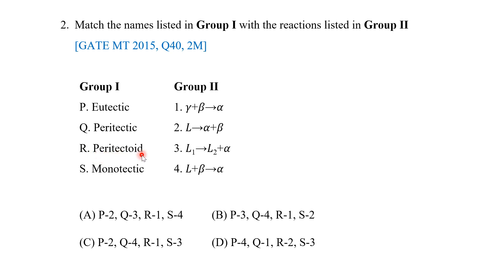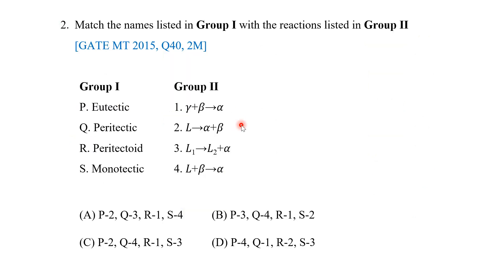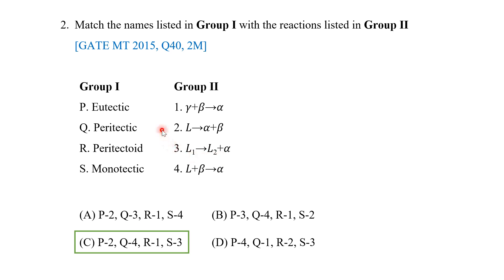Peritectic involves a liquid and two solids: liquid + β gives α, which is option 4. From these two we can already narrow down the answer. For peritectoid, it is solid₁ + solid₂ giving solid₃ — for example, γ + β gives α. For monotectic, liquid₁ gives liquid₂ + α. Based on this matching, our answer is option C.